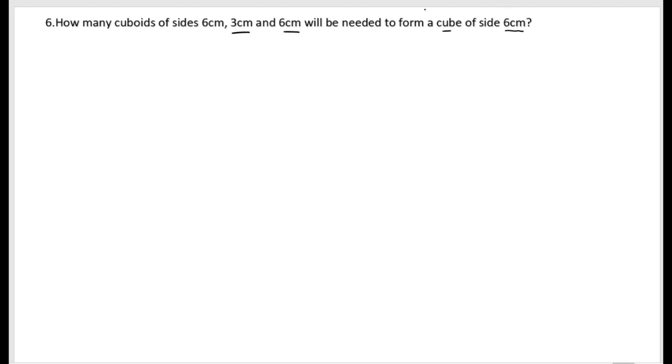So we need to form a cube from cuboids. How many cuboids do we need to make a single cube?